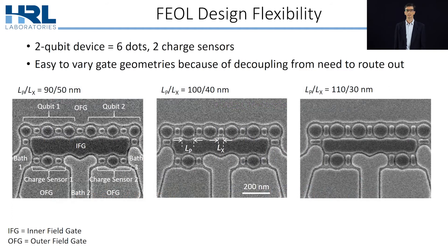Here are top-down SEM images of various two-qubit devices. The geometry is that there are six quantum dot gates separated by five exchange gates. Underneath each qubit is a charge sensor made by one quantum dot gate with two tunnel barrier gates. Leading to either side of these charge sensors are bath gates, which funnel in conductive two-dimensional electron gas from ohmic contacts to the outside world. Gating all other regions into depletion are gates we call field gates, which can be either the inner field gate or outer field gate. Because of the separated front end, we have flexibility in their design, and you'll see three different geometries shown here.